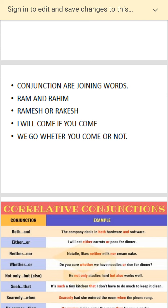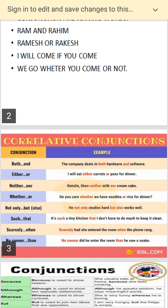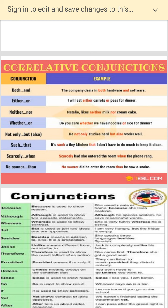Now what is a conjunction? Conjunctions are joining words. Suppose Ram and Rahim, Ramesh or Rakesh — 'and' joins them. I will come if you come. 'If' is a conjunction here. We go whether you come or not. So whether, if, or, and — they are all conjunctions and they are usually used to join sentences.